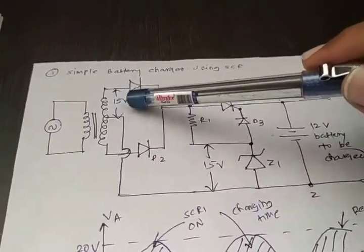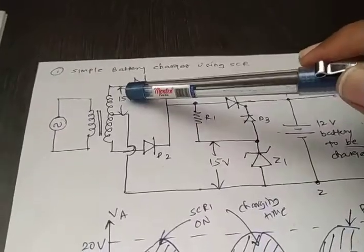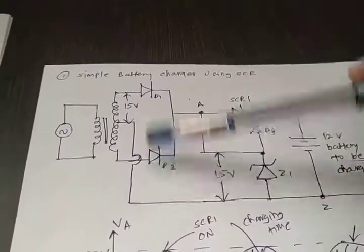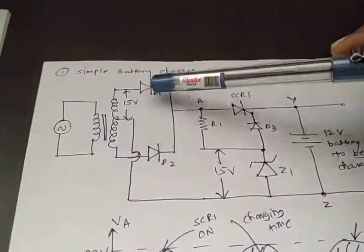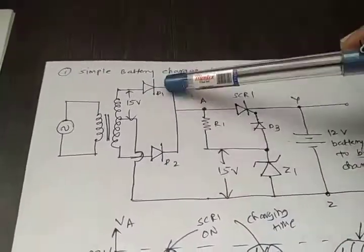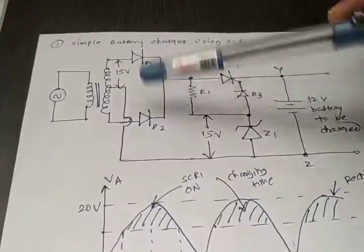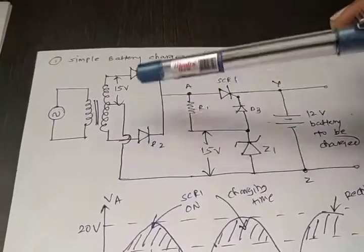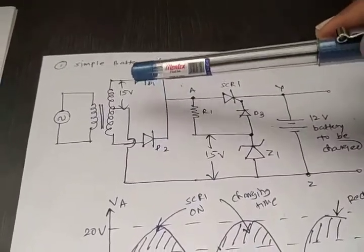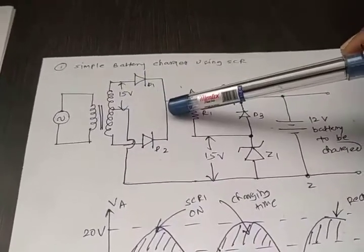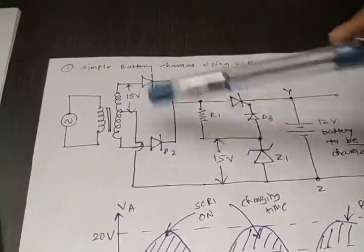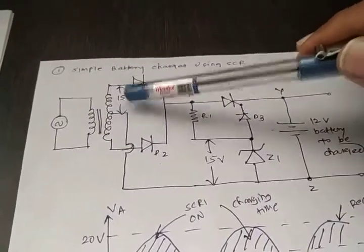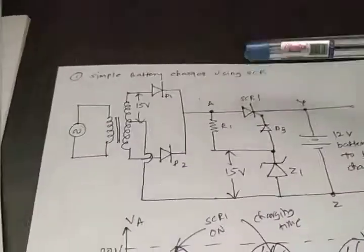The 15 volts from the secondary comes to diodes D1 and D2. These two diodes form a rectifier circuit, and the purpose of this rectifier circuit is to convert the AC signal into DC. Using this rectifier circuit we convert the 15 volt AC signal into DC.